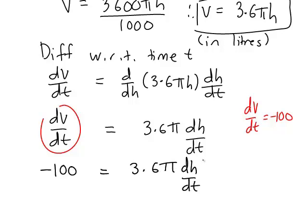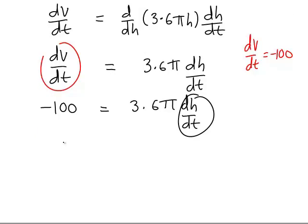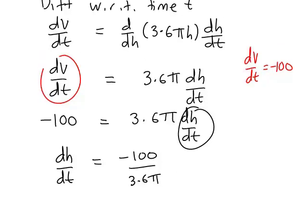And finally we now rearrange for the unknown rate which is the rate of change of height with respect to time. So to make dh/dt the subject we could swap the sides of the equations around and also divide both sides by 3.6 π giving dh/dt is negative 100 divided by 3.6 π. And that works out to tell us that dh/dt is equal to negative 8.84.